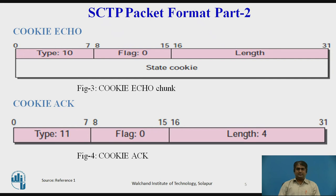Cookie ACK: The Cookie ACK chunk is the fourth and last chunk sent during association establishment. It is sent by an endpoint that receives a cookie echo chunk. The packet that carries this chunk can also carry user data. The format is shown in the figure. This is a simple chunk of type 11. The length of the chunk is exactly 4 bytes.